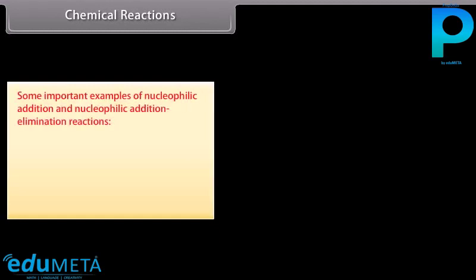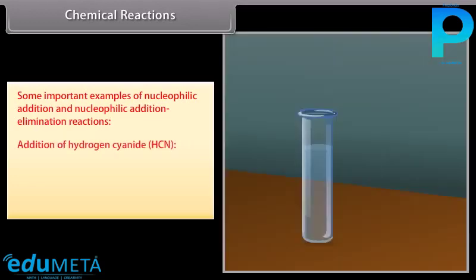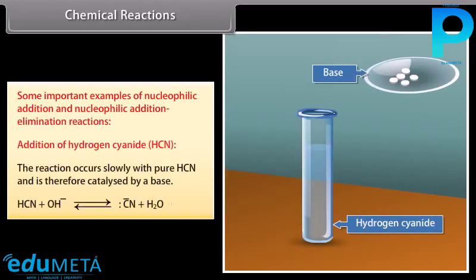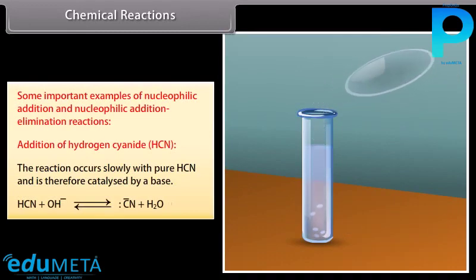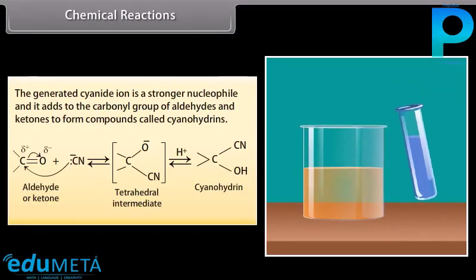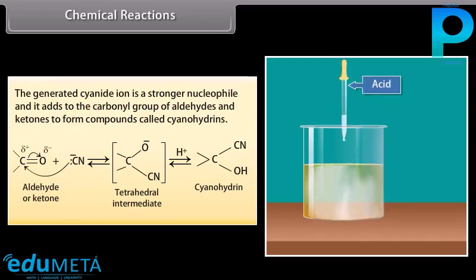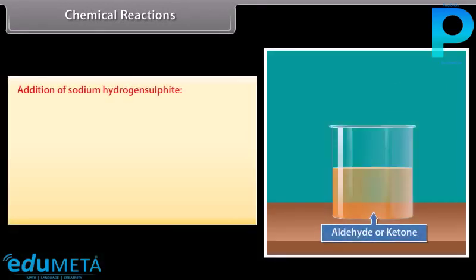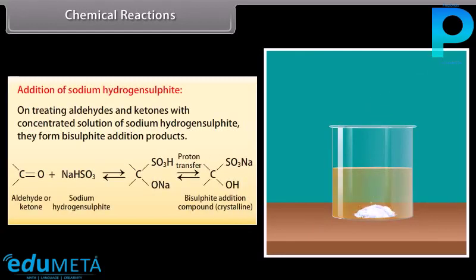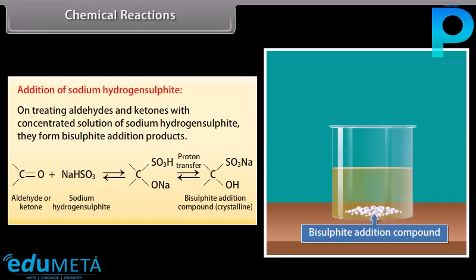Some important examples of nucleophilic addition and nucleophilic addition-elimination reactions. Addition of hydrogen cyanide: the reaction occurs slowly with pure HCN and is therefore catalyzed by a base. The generated cyanide ion is a stronger nucleophile and it adds to the carbonyl group of aldehydes and ketones to form compounds called cyanohydrins. Addition of sodium hydrogen sulfite: on treating aldehydes and ketones with concentrated solution of sodium hydrogen sulfite, they form bisulfite addition products.